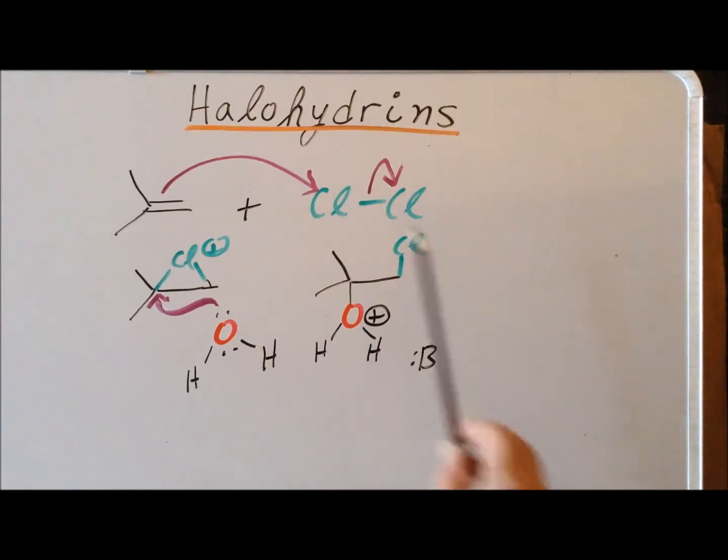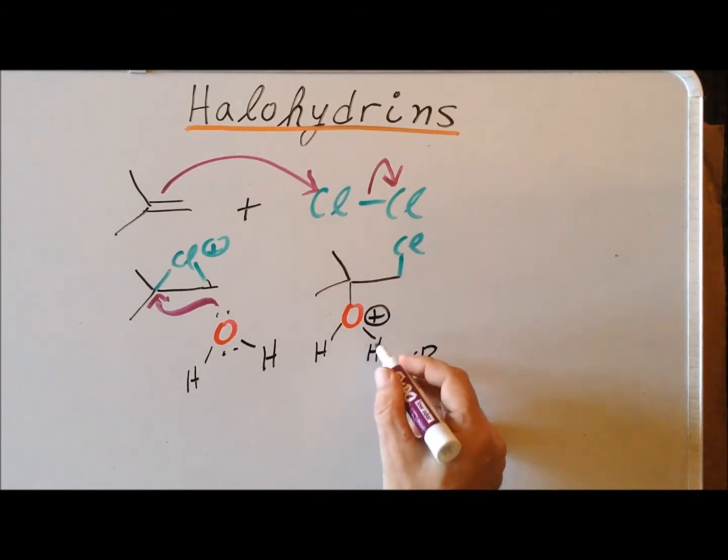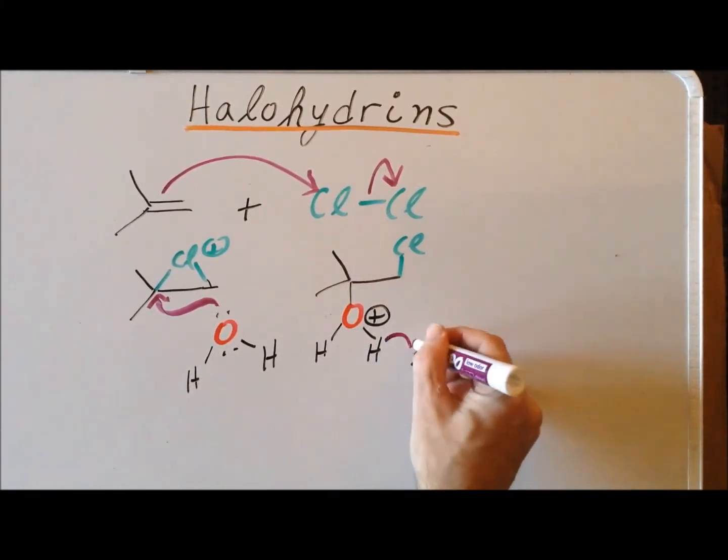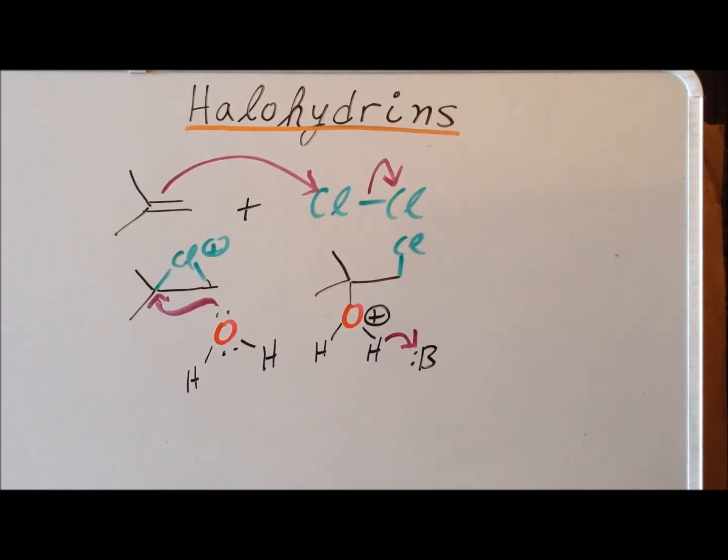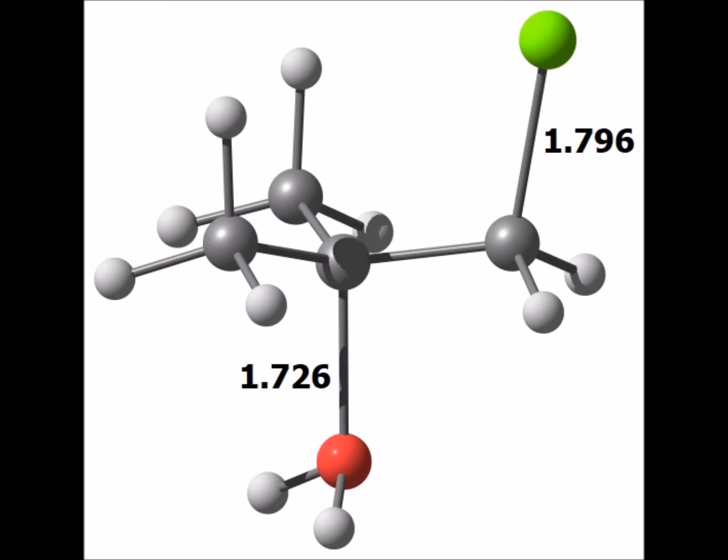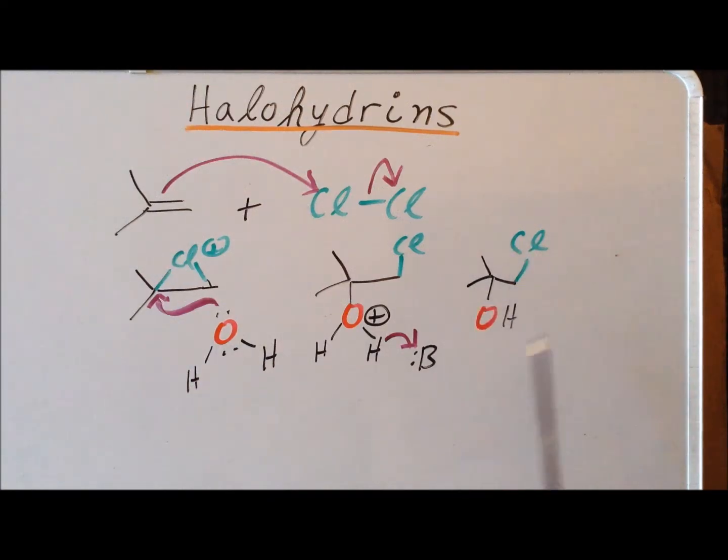Now, at this stage, we have the protonated alcohol. We actually have an oxonium ion. Oxygen, the second most electronegative of the elements, here actually has a positive charge. As a final step, the H-plus proton is abstracted by the base, which is just the solvent water. And this yields our halohydrin product, which is 1-chloro-2-methyl-2-propanol.